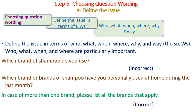Step five: choosing question wording. A — define the issue in terms of the six Ws: who, what, when, where, why, and way. For example, 'Which brand of shampoo do you use?' is incorrect. The correct version is: 'Which brand or brands of shampoo have you personally used at home during the last month? In case of more than one brand, please list all the brands that apply.'